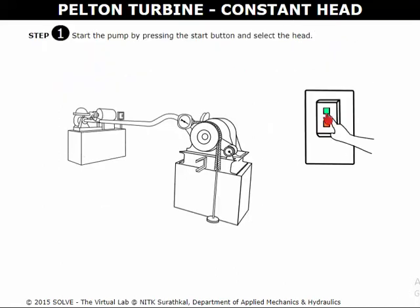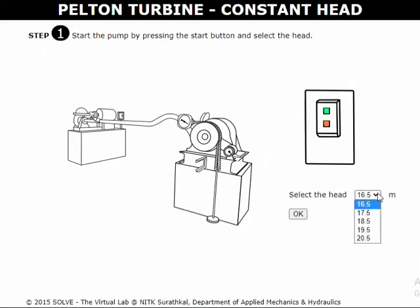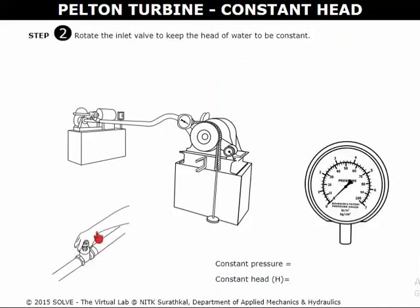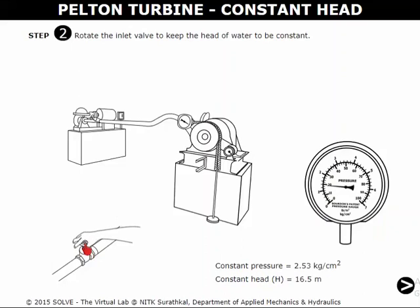Click on the green button to start the pump and click here to select the head from the drop-down menu. Click on the hand here to rotate the inlet valve and allow the water to flow. Note down the constant head and constant pressure.